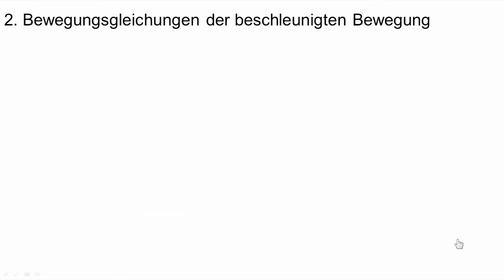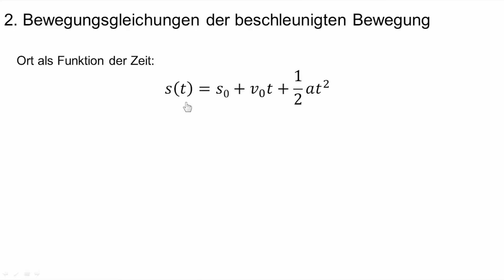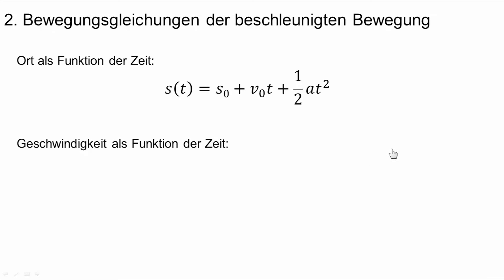Das zweite, was es zu verstehen gilt, sind die Bewegungsgleichungen der beschleunigten Bewegung. Zunächst im eindimensionalen Fall wird der Ort als Funktion der Zeit dargestellt als S(t) = S0 + V0·t + ½·a·t². Hierbei ist S0 ein Startpunkt, V0 ist die Anfangsgeschwindigkeit der Bewegung und a die Beschleunigung. Die zweite Bewegungsgleichung ist die Geschwindigkeit als Funktion der Zeit: V(t) = V0 + a·t. Auch hier haben wir wieder V0 die Anfangsgeschwindigkeit und a die Beschleunigung.